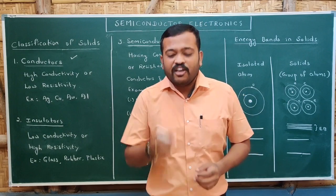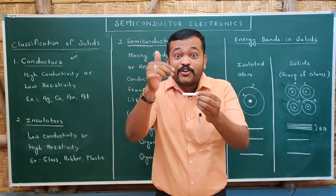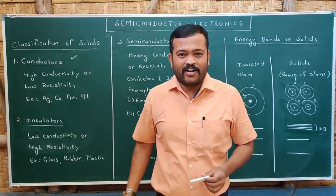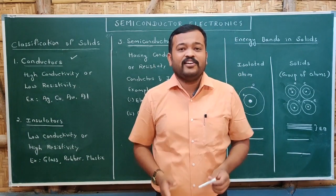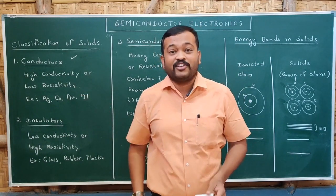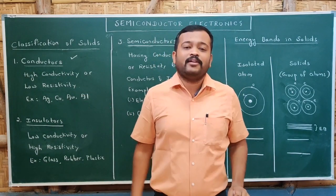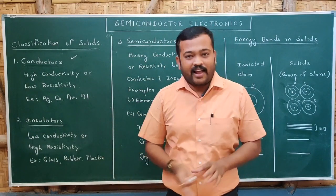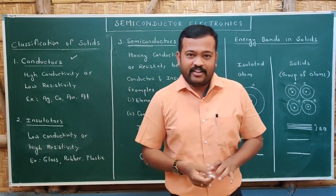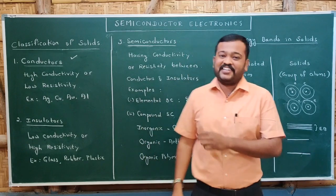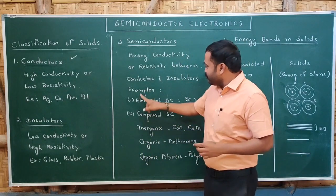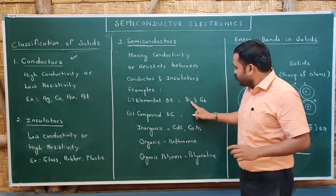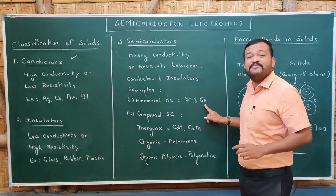The special properties of semiconductors are: first, we can control the current through a semiconductor, whereas in conductors we cannot control it. Second, if you want to send current in only one direction, that can be done using semiconductors. That is why we are moving with semiconductors rather than conductors. The examples include elemental semiconductors: silicon and germanium.